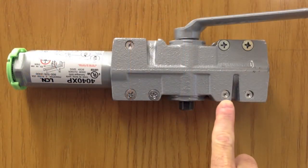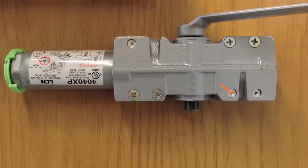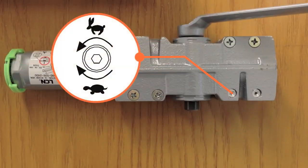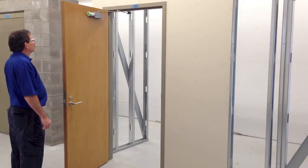Locate the main speed screw. It is located on the face of the closer closest to the pinion where the arm is attached to the body. Make an adjustment one quarter turn at a time, clockwise to decrease speed and counterclockwise to increase speed. Then, open the door and release it to observe the closing speed.